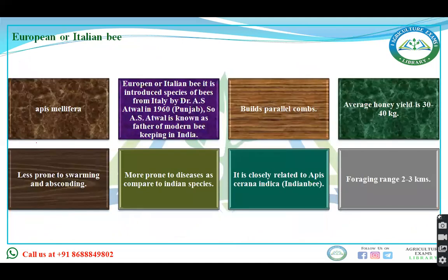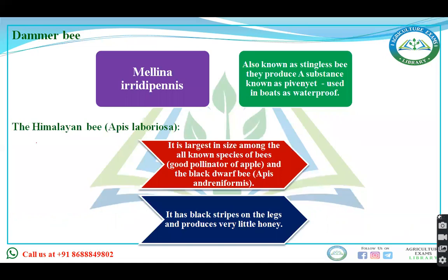European honey bee is Apis mellifera. It is an introduced species of bees from Italy. They also build parallel combs but are less prone to swarming and absconding, and have a greater foraging range than the Indian bee. Damar bee is Meliponini iridipenis.